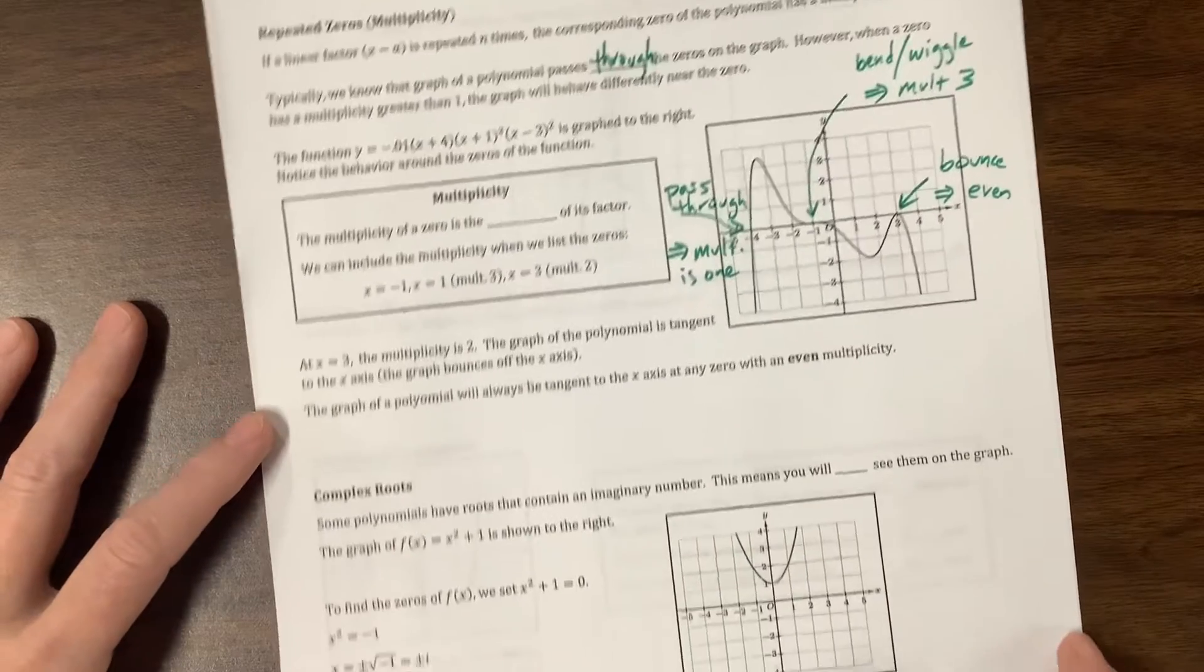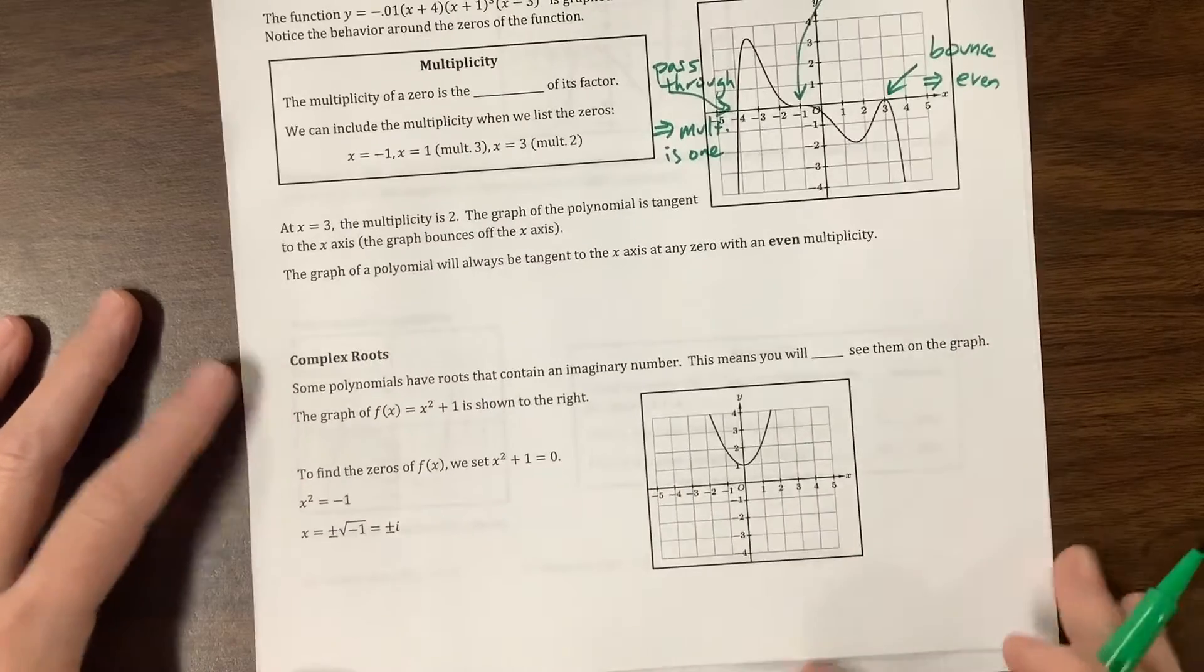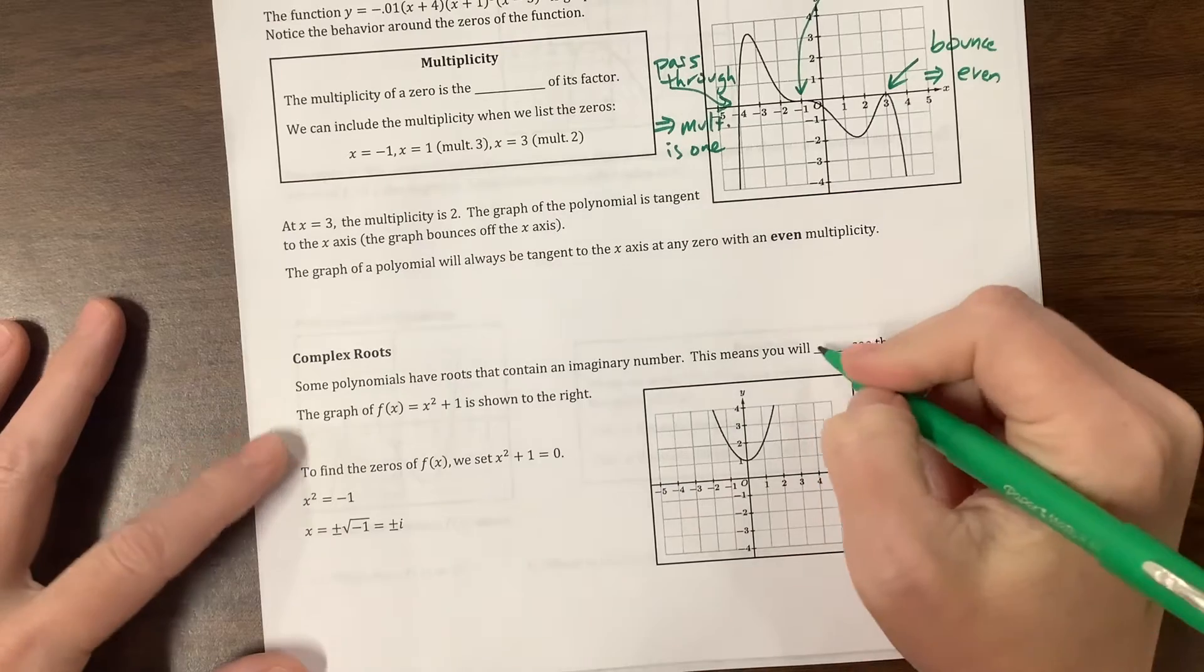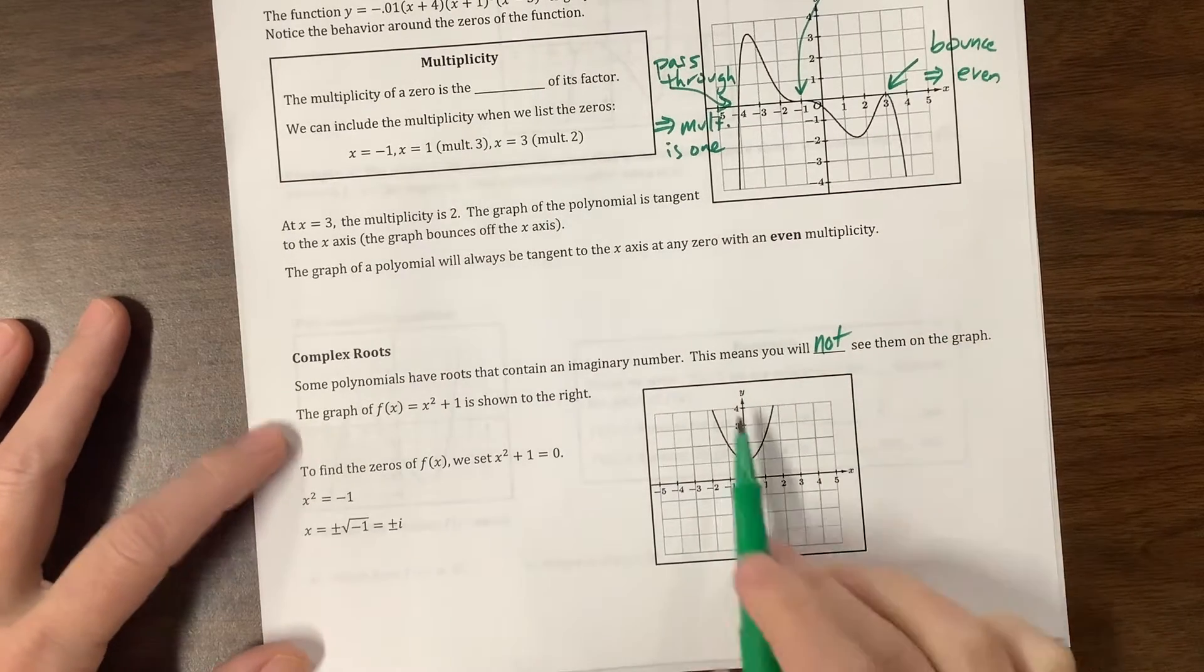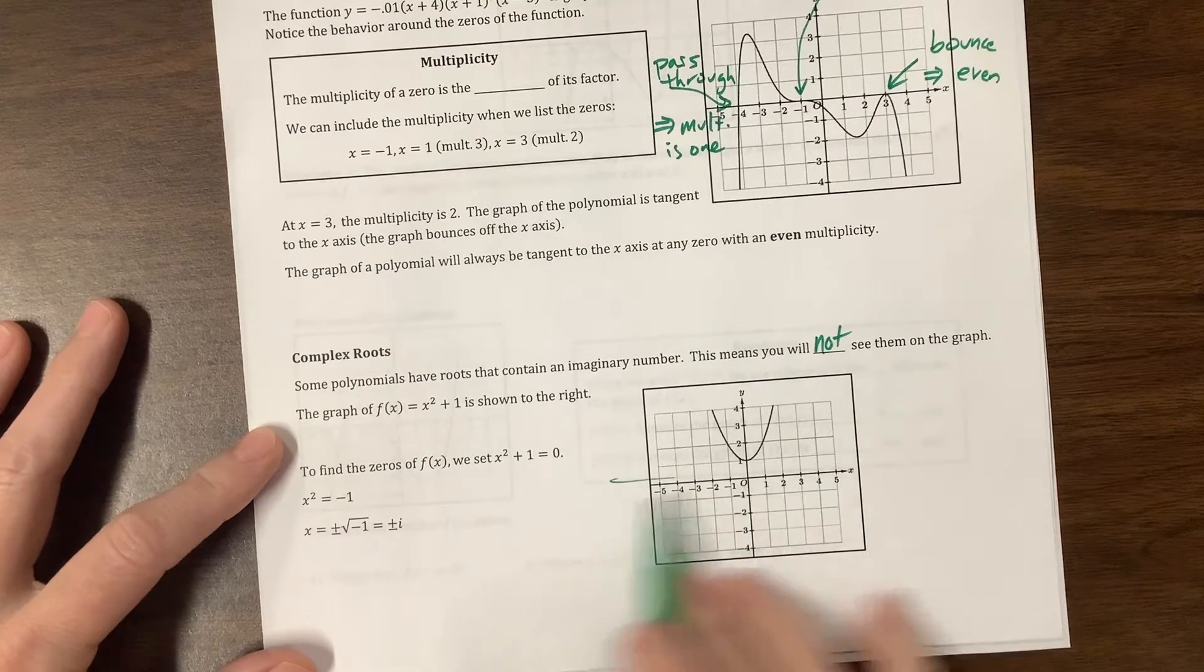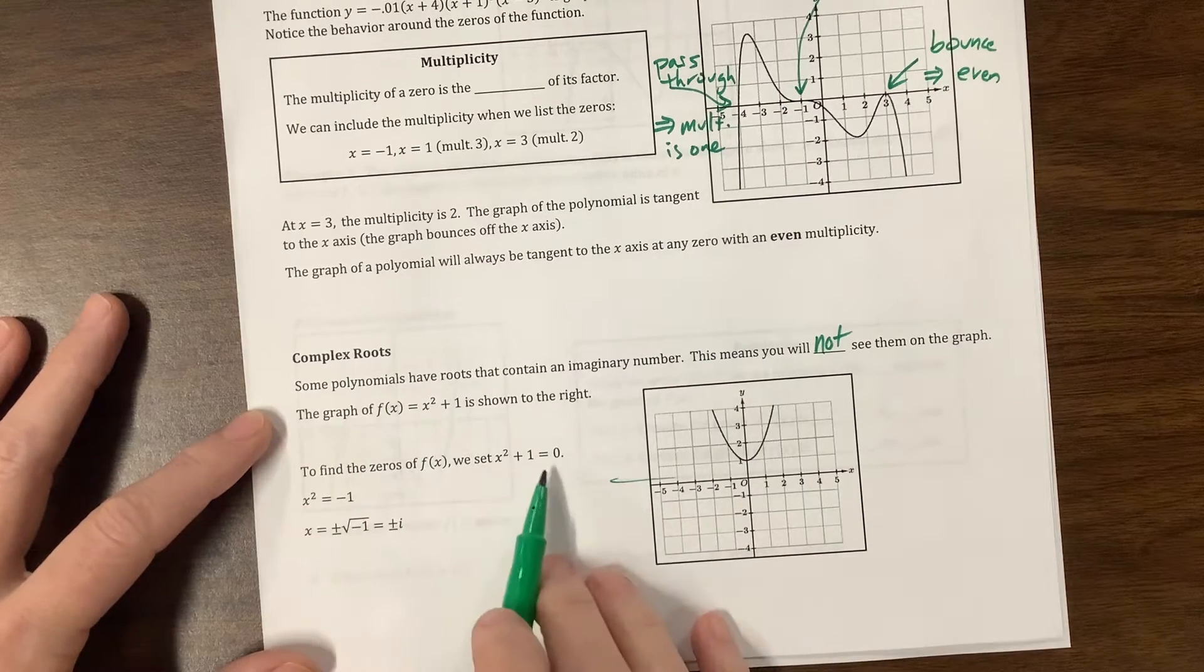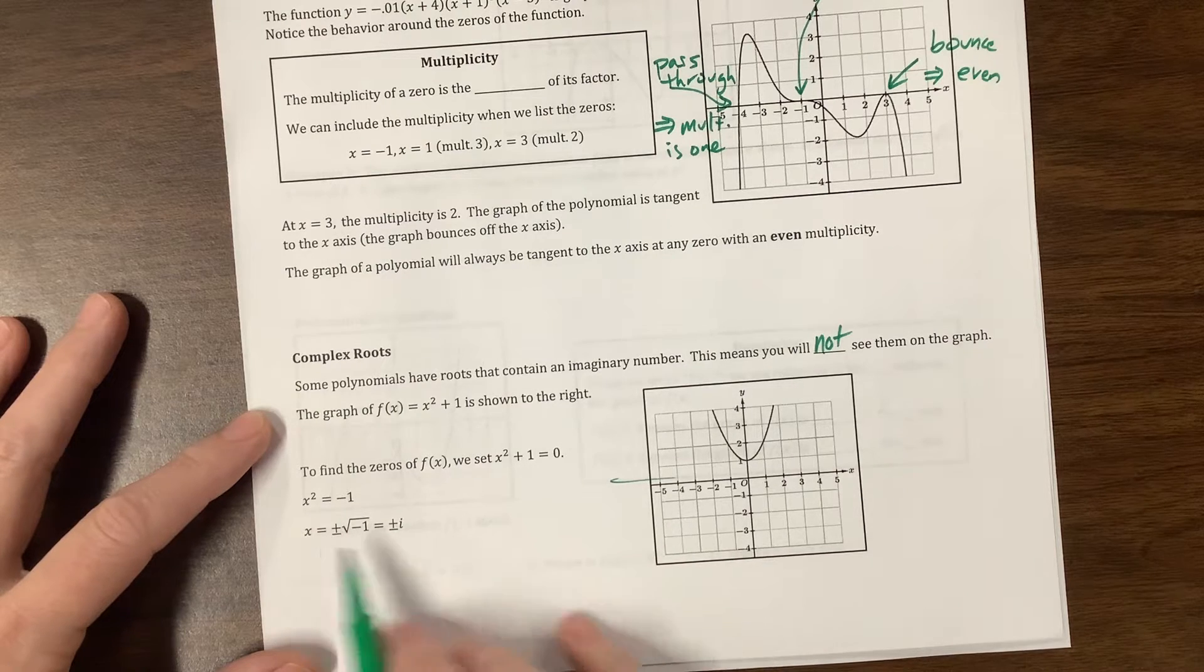The next one, so we can also talk about what happens when we have non-real zeros. We could have complex roots, and you will not necessarily see them on the graph. For example, if you just take this parabola, we've taken the parent function and shifted it up 1. Notice it doesn't cross the x-axis anywhere. We can solve this, though.